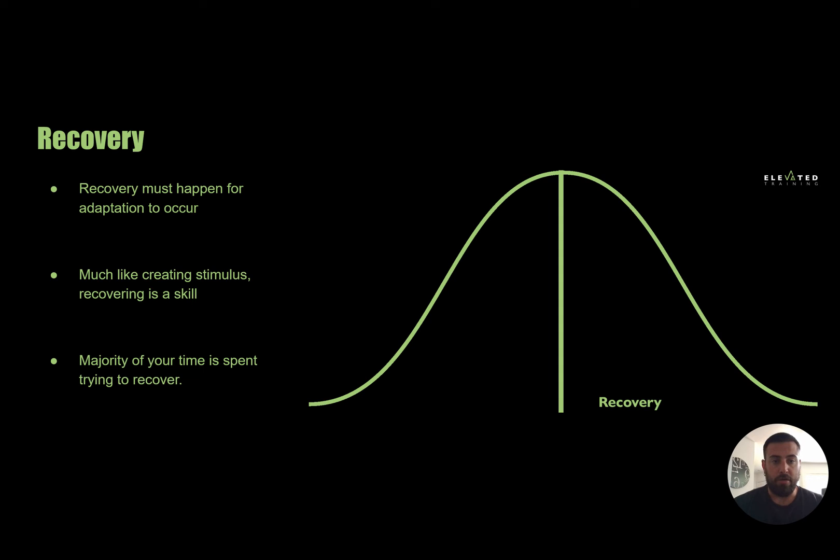Leading into recovery - the other half of this bell curve that makes out all of the area in which we have gains is going to be our recovery. Recovery must happen for adaptations to occur. If we are getting great stimulus but we're not recovering well, chances are the adaptation is not going to be as great, or maybe even not at all depending on how bad the recovery is. Much like creating stimulus, recovering is a skill.